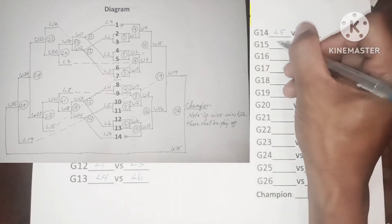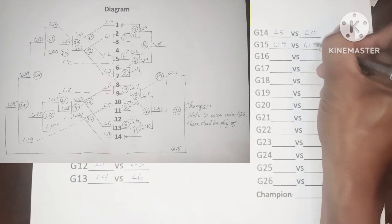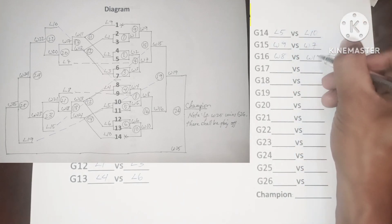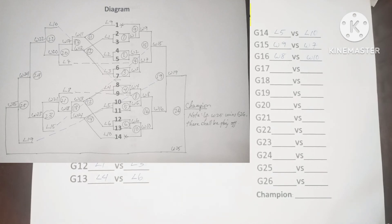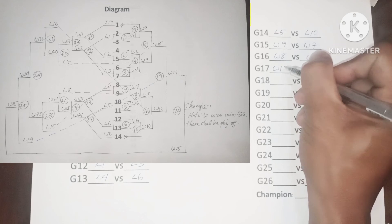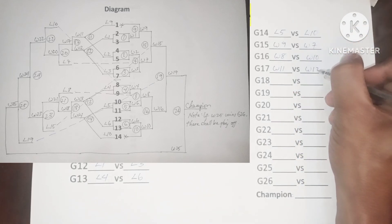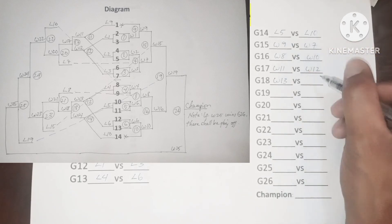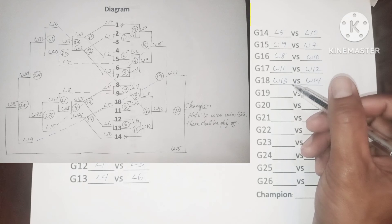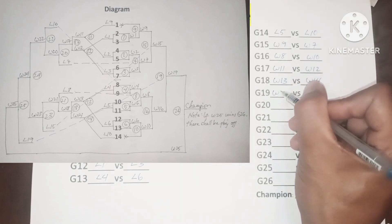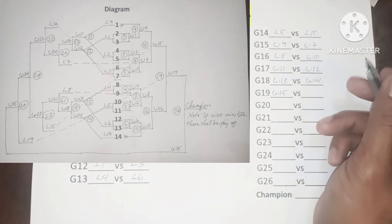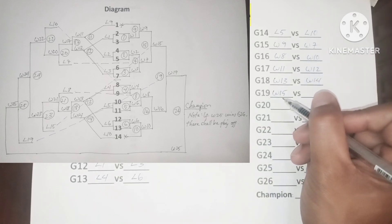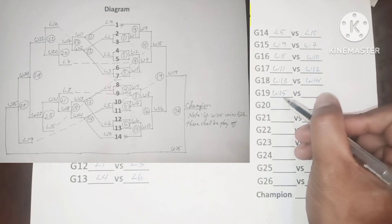In game 15, we have winner 9 versus winner 7. In game 16, we have winner 8 versus winner 10. In game 17, we have winner 11 versus winner 12. In game 18, winner 13 versus winner 14. In game 19, we have winner 15 versus winner 16.